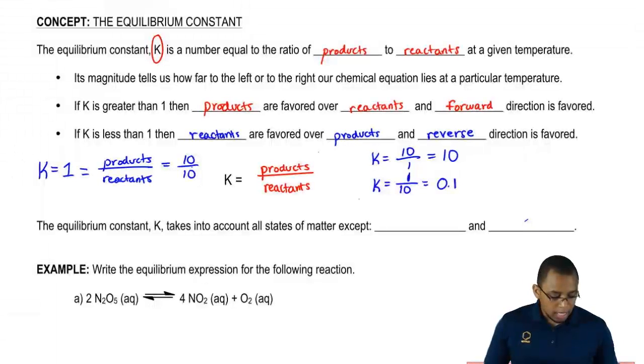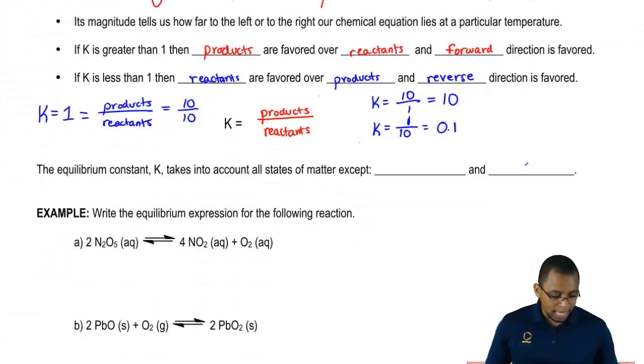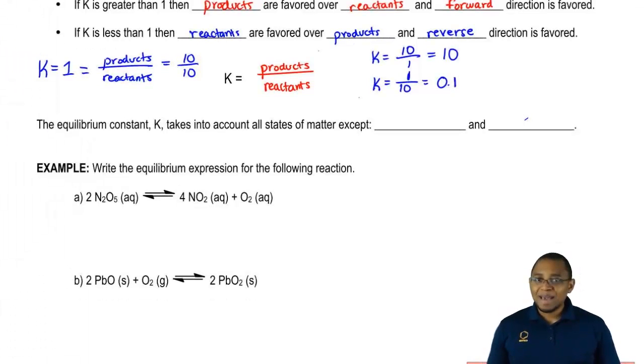The equilibrium constant K takes into account all the states of matter except two. It doesn't look at solids and it doesn't look at liquids. It ignores those two states of matter.